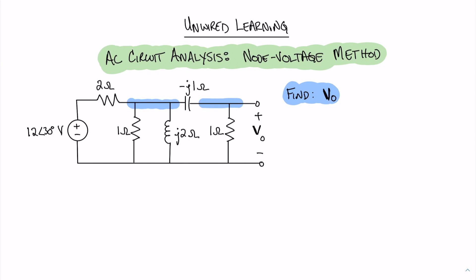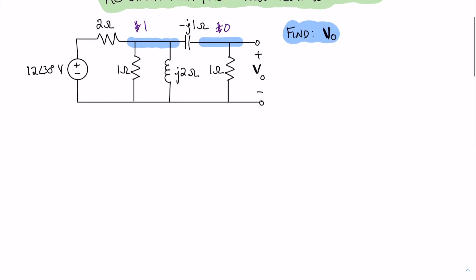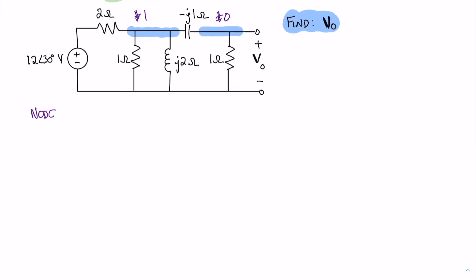Let's label this left node as node 1, and let's label the right node as node 0 to correspond with the fact that we're calling it Vout. Now let's go ahead and write our node equation for node 1. Starting with our left 2-ohm resistor, we can write our first term of our node voltage equation for node number 1.